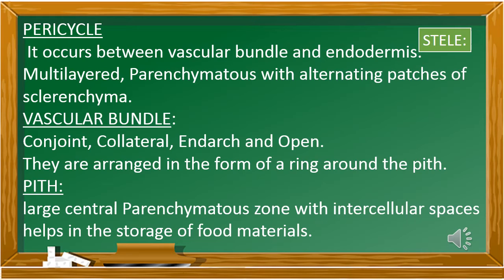So the vascular bundle of a dicot stem is described by four terms: conjoined, collateral, end-arch, and open. The bundles are arranged in the form of a ring around a pith. The pith is a vast large area made up of parenchymatous cells with intercellular spaces, which helps in storage of food materials.